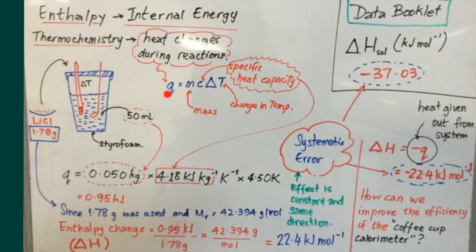The heat changes or enthalpy changes in the system can be found by multiplying the mass of the water in the cup. 50 milliliters has a mass of 50 grams, which is 0.050 kilograms.